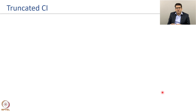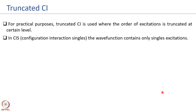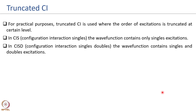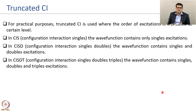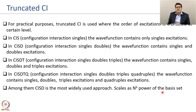Since full CI cannot be used for practical systems, you need to truncate. Depending on the order of excitation at which you truncate, you get the corresponding method name: truncating at single excitation gives configuration interaction singles (CIS); at double excitation, configuration interaction singles and doubles (CISD); at triple excitations, CISDT; and at quadruple excitations, CISDTQ. Among these, CISD is the most widely used approach and scales as N to the power of 6.